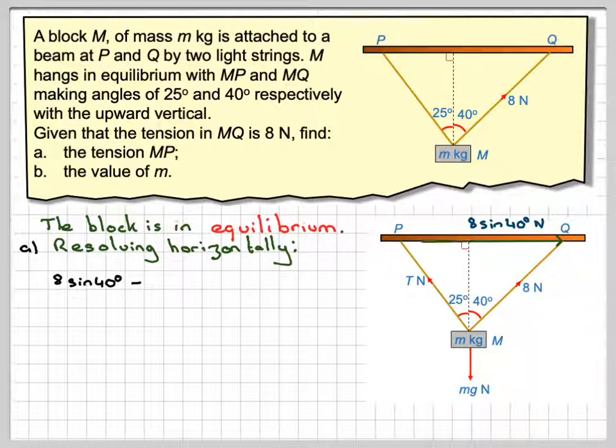Acting in the opposite direction we're going to have T sine 25 newtons. So minus T sine 25, and that's equal to zero because the whole thing is in equilibrium.